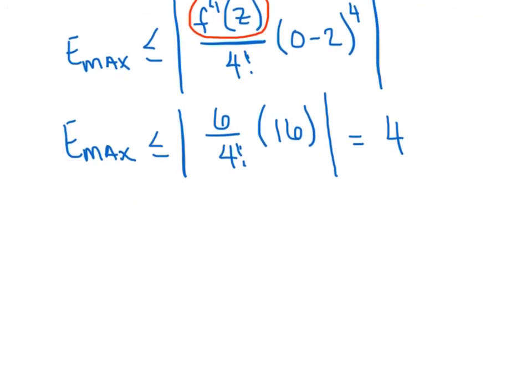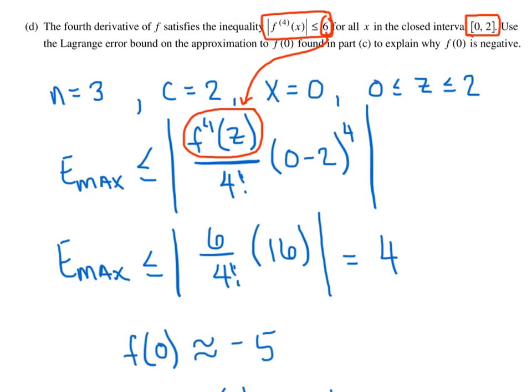Now, if you recall in Part C, we said that f(0) was approximately negative 5. So we could be off in either direction. So the real f(0) lies within the interval negative 9 all the way up to negative 1. And so we've proven that f(0) has to be negative. And that's what they're really asking us to do here at the end of that sentence. You could see they're asking us to prove that it's negative, and that clearly does.